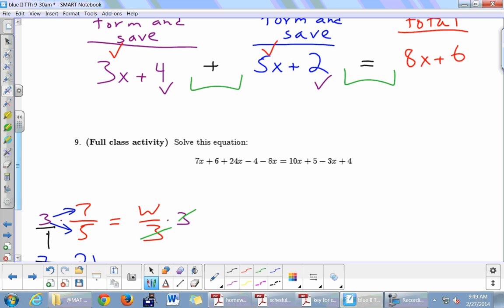We're going to do together this number 9 here. This equation is more complicated than any one we've solved before. We're not going to build it, but we're going to use this idea of like terms from above. This and this are called like terms, and this one and this one were also like terms.